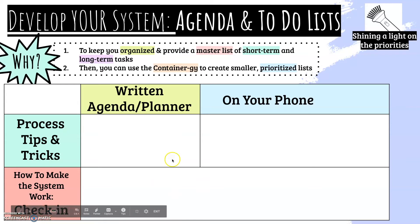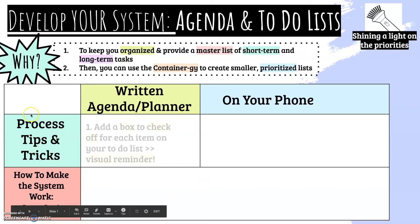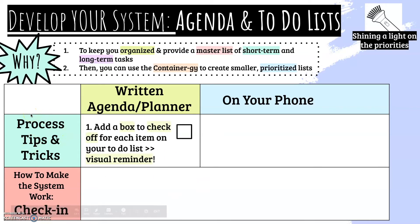So when it comes to a written agenda or planner, the biggest tip I can give is add a box next to each item you want to accomplish in the day. That's a visual reminder — I haven't done this, I need to do this. Once I do it, I can then check it off. Plus, it's pretty fun to check it off.